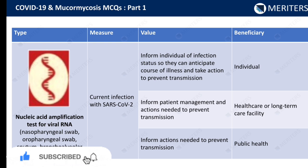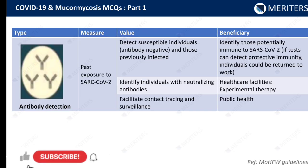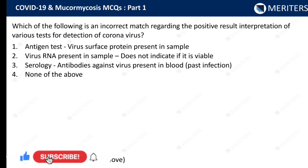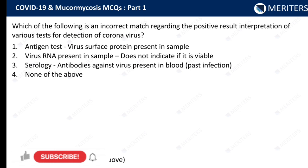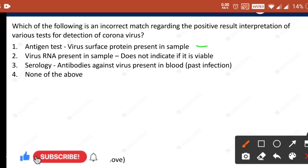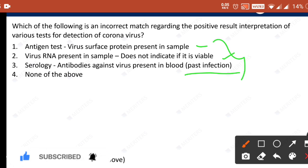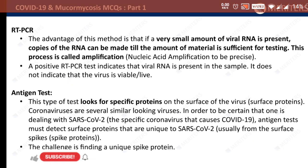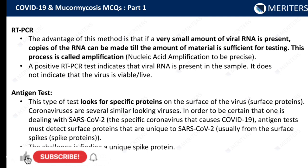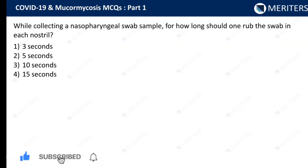Again, here is a chart you should note down. Which of the following is an incorrect match regarding the positive result interpretation of various tests for detection of coronavirus? Antigen test: virus surface protein present in sample. PCR: virus RNA present in sample but does not indicate if it is viable. Serology: antibodies against virus present in blood, showing past infection. All of these are correct matches, so the answer is none of the above. These are key points about RT-PCR, antigen test, and antibody test.